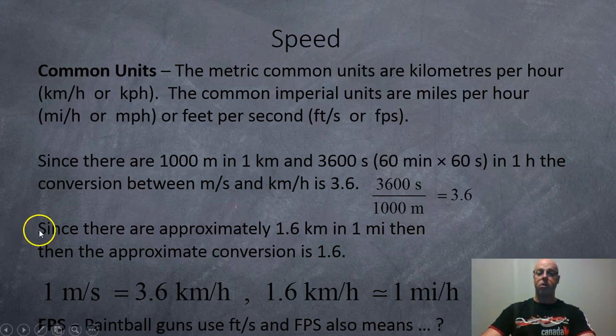And there is approximately 1.6 kilometers in a mile. And therefore, the approximate conversion number for miles per hour and kilometers per hour is 1.6. It's not exact though, it's just approximate. Good enough for our course. So, 1 meter per second is 3.6 kilometers per hour. And 1.6 kilometers per hour is around 1 mile per hour.